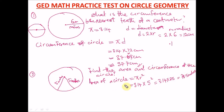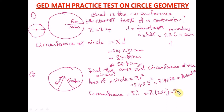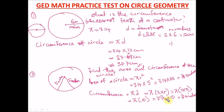Now for the circumference of this circle: C = π × d = π × (2r) = 3.14 × (2 × 5) = 3.14 × 10. Multiplying by 10, we just shift the decimal point one place to the right, giving us 31.4 inches. That is our answer for the circumference of this circle.